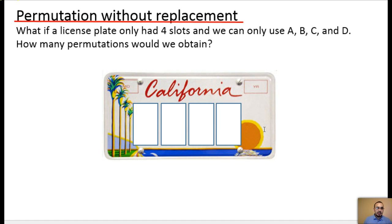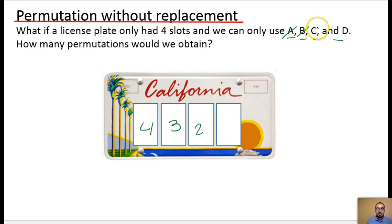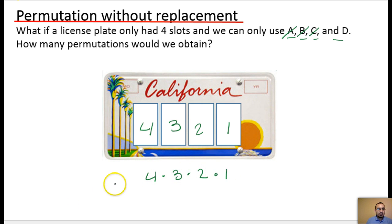Permutation without replacement: what if a license plate only had four slots and we can only use A, B, C, and D? On the first slot, how many letters do we have to choose from? Four. If I use A, how many are left? Three. If I use B, how many are left? Two. If I use C, how many are left? One. So we multiply them using the counting principle. We get four times three times two times one.